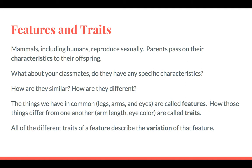We looked at classmates and what they have in common and what differences they have. We all have things in common such as legs, arms, eyes, nose, ears, hair — and those are all called features. How those things differ from one another, such as arm length, eye color, hair color, attached earlobes or unattached earlobes, are called traits.